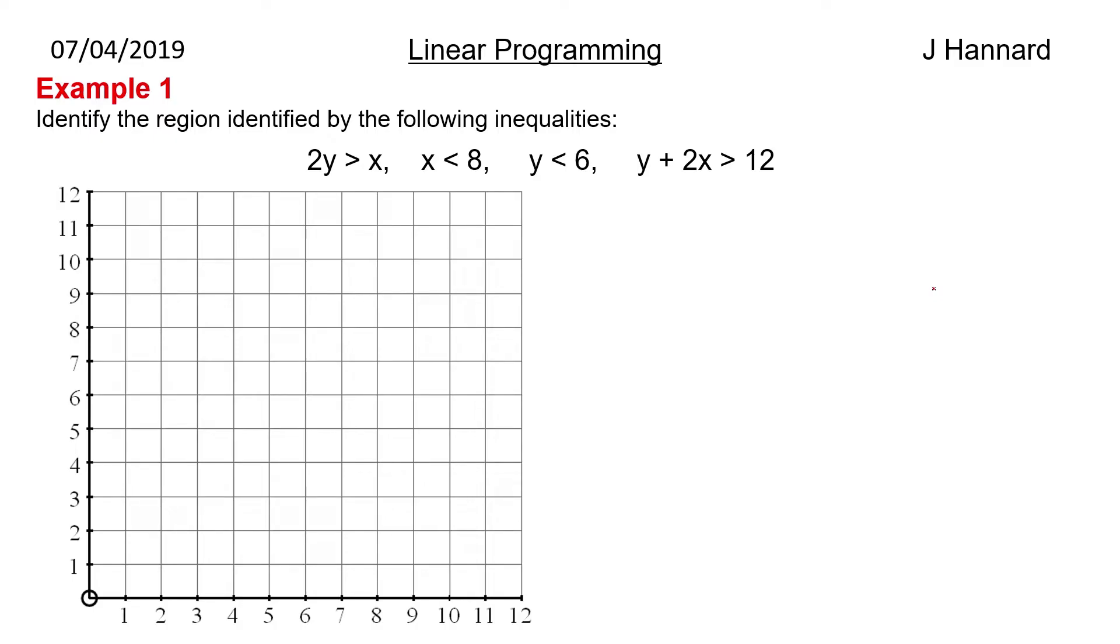So example one then. Identify the region identified by the following inequalities: 2y is greater than x, x is less than 8, y is less than 6, and y plus 2x is greater than 12. So first of all we're going to focus on 2y is greater than x. So what does that actually mean? Well what it actually means is 2y is equal to x. You know treat it as an equation. Rearrange if necessary. So y is a half x.